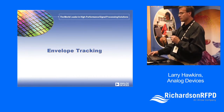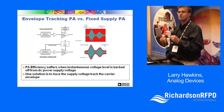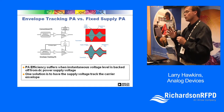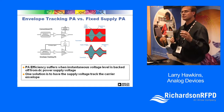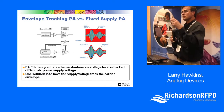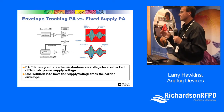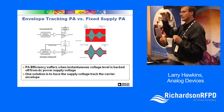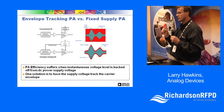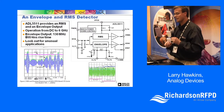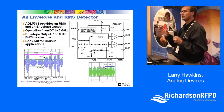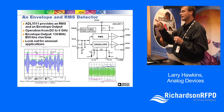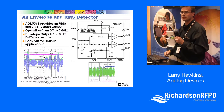A different signal type to detect is the envelope of your signal. New techniques for improving PA efficiency include envelope tracking, and some customers may not have direct access to that envelope. We have a part that follows the signal envelope so you can extract it to adjust the bias on your final-stage PA based on envelope level. The ADL5511 has both an RMS output to report average power and an envelope output to control PA bias for envelope tracking applications.